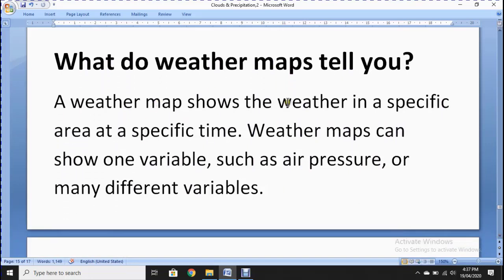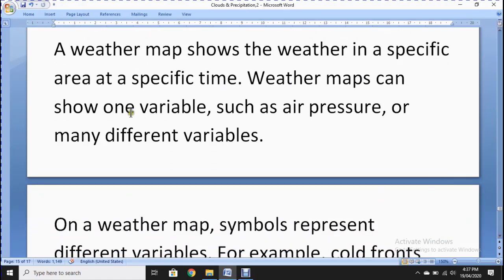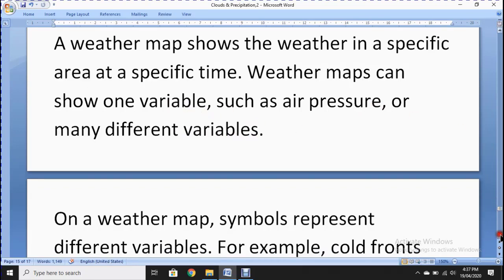What do weather maps tell you? Weather maps show the weather in a specific area at a specific time. They plot a graph and tell us. Weather maps can show one variable such as air pressure or many different variables that may be changed. Variable means that can change, not fixed, not constant.